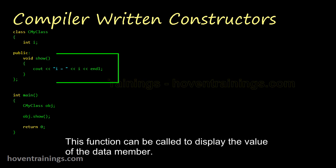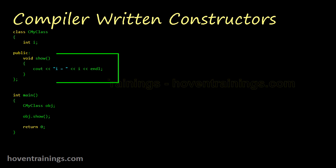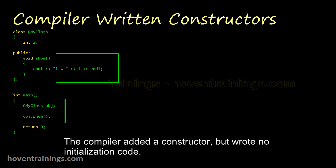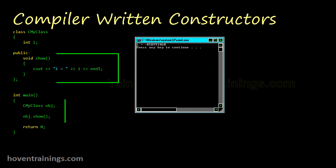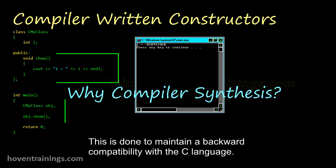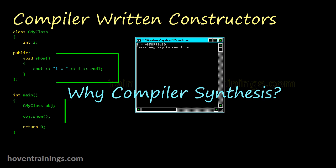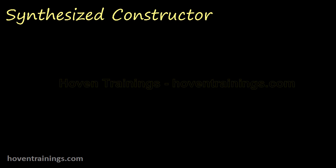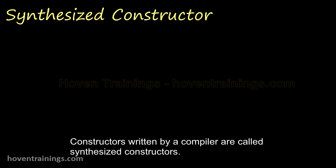This function can be called to display the value of the data member. When this code is run the display is a garbage value. The compiler added a constructor, but wrote no initialization code. This is the output on my machine. Why does the compiler add a constructor? This is done to maintain backward compatibility with the C language. Constructors written by a compiler are called synthesized constructors.